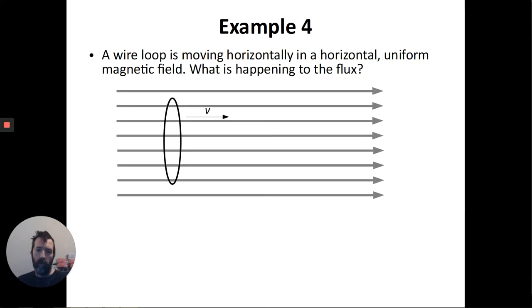Example four, my wire loop. It's moving horizontally in this uniform field. What is happening to the flux? Well, the flux depends on the magnetic field strength, but that's constant. It depends on the area of the loop. That's also constant. And it depends on the angle between the area and the magnetic field. But that is also constant here.